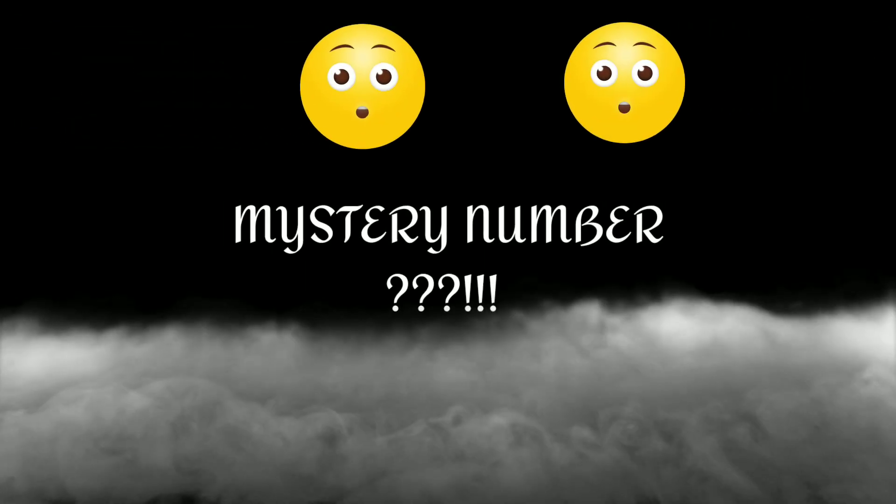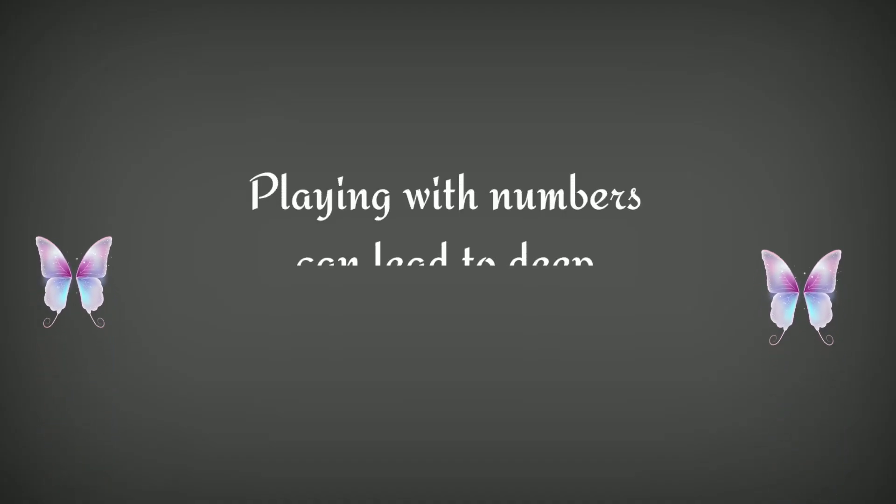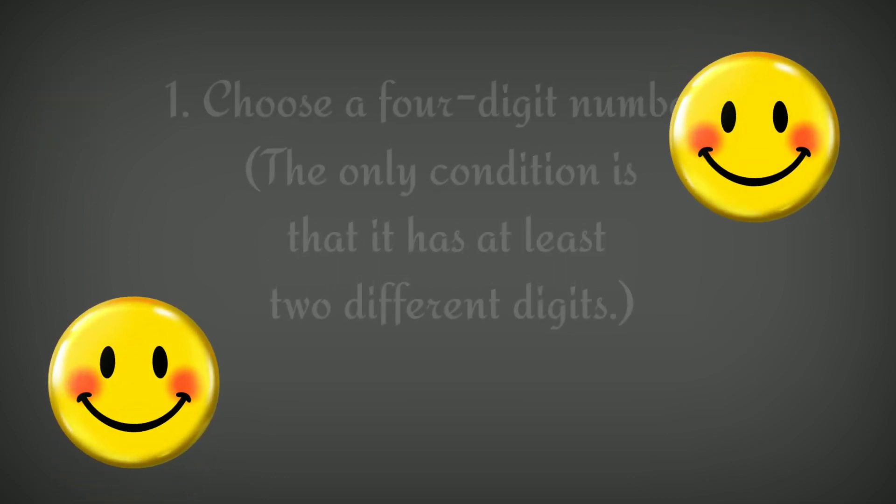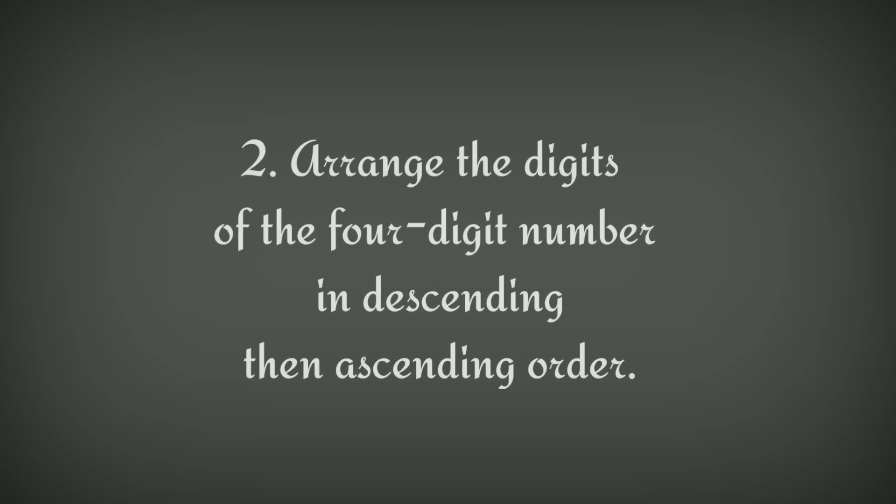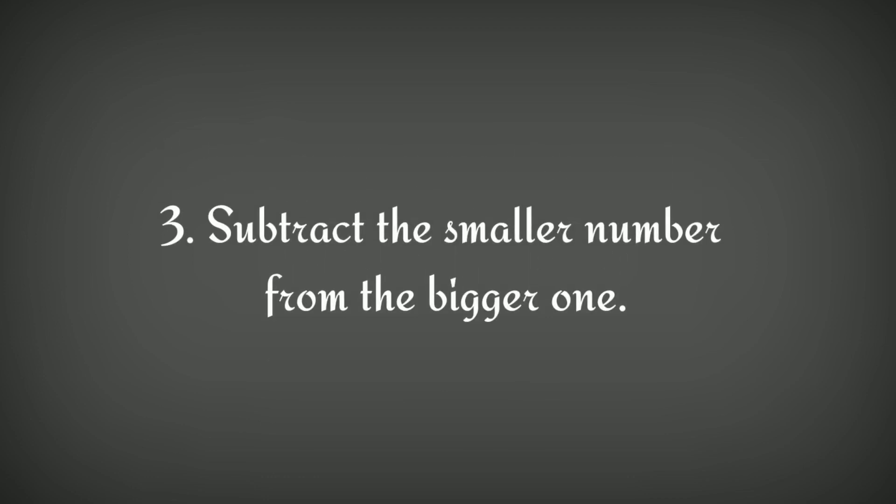Mystery number. Want to know about this? Come join with me. Playing with numbers can lead to deep mathematical and scientific insights. Let's play a short game. Choose a four-digit number. The only condition is that it has at least two different digits. Arrange the digits of the four-digit number in descending and then ascending order. Subtract the smaller number from the bigger one.